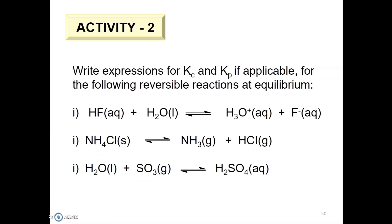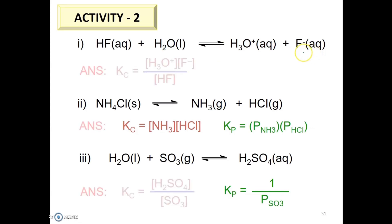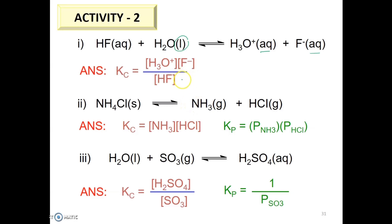Let's try Activity 2 together: write expressions for Kc and Kp where applicable for the following reversible reactions at equilibrium. The concentrations and partial pressures represent values of the species at equilibrium. (1) HF aqueous plus H2O liquid produces H3O⁺ aqueous plus F⁻ aqueous. The Kc expression is: concentration of H3O⁺ times concentration of F⁻ (both in the aqueous phase), over concentration of HF only — since H2O appears as a pure liquid, it is not included in the Kc expression.